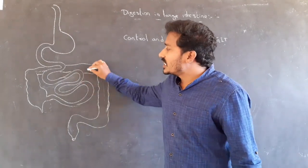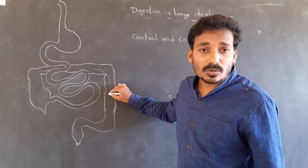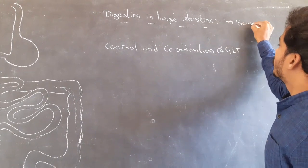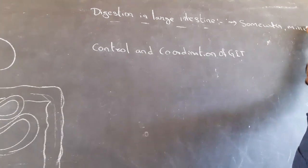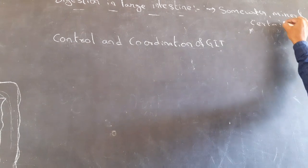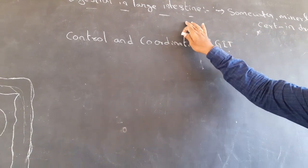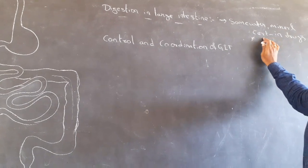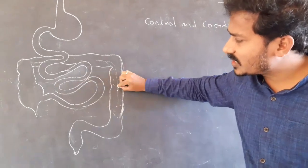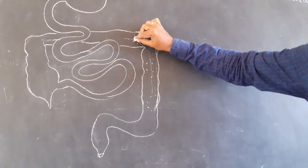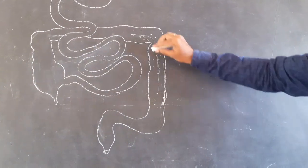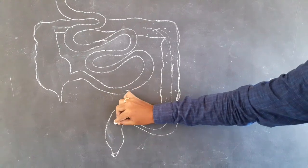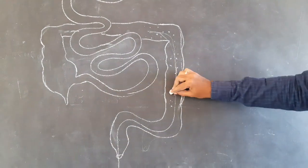In the large intestine, there is no significant role in digestion. But it absorbs some water, minerals, and certain drugs. The large intestine also secretes mucus, which helps in adhering undigested food particles together and lubricating them for easy passage.